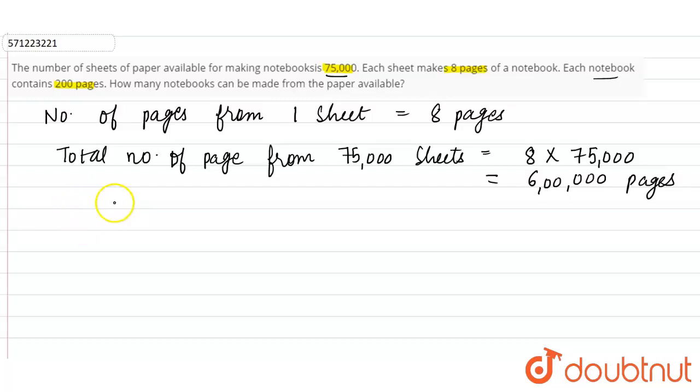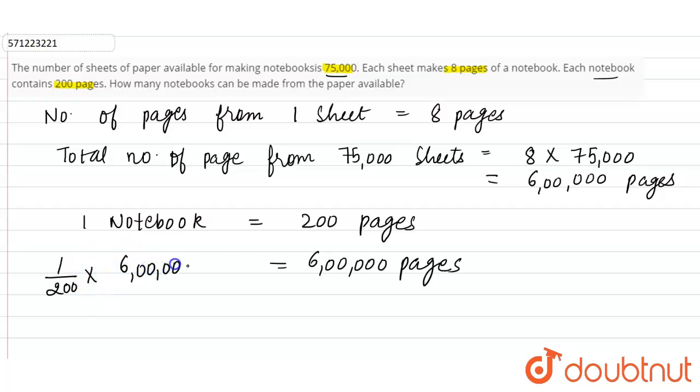So one notebook has 200 pages, or we can say from 200 pages we can make one notebook. So from 6 lakh pages, how many notebooks can be made? 1 divided by 200, 1 divided by 200 into 6 lakhs, into 6 lakhs.